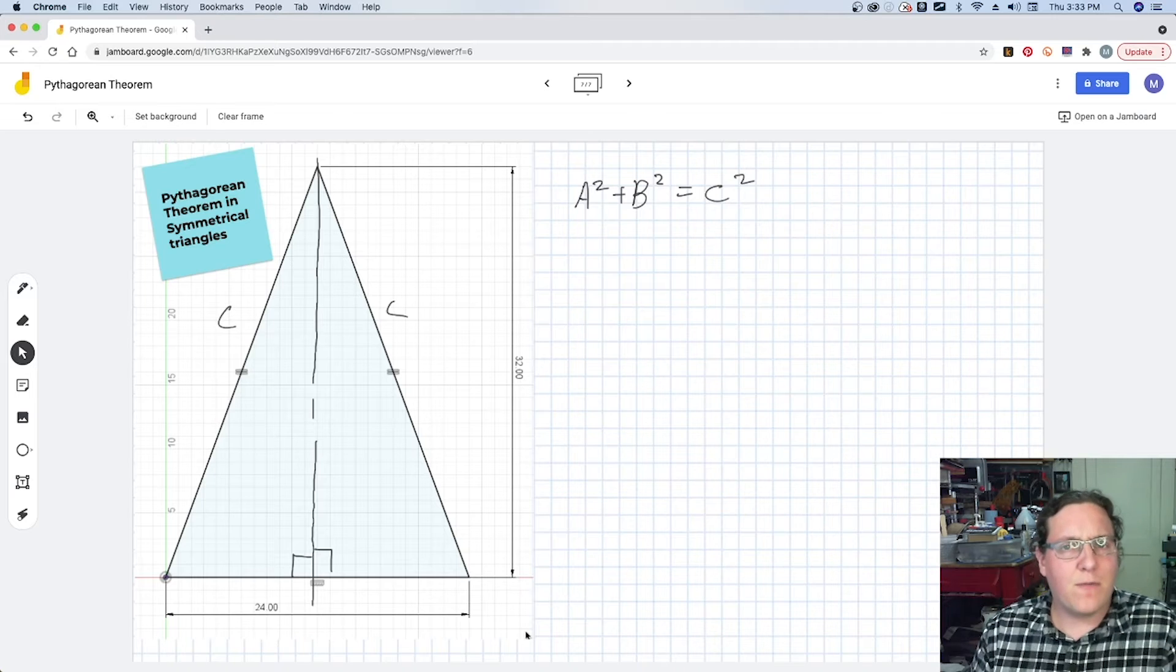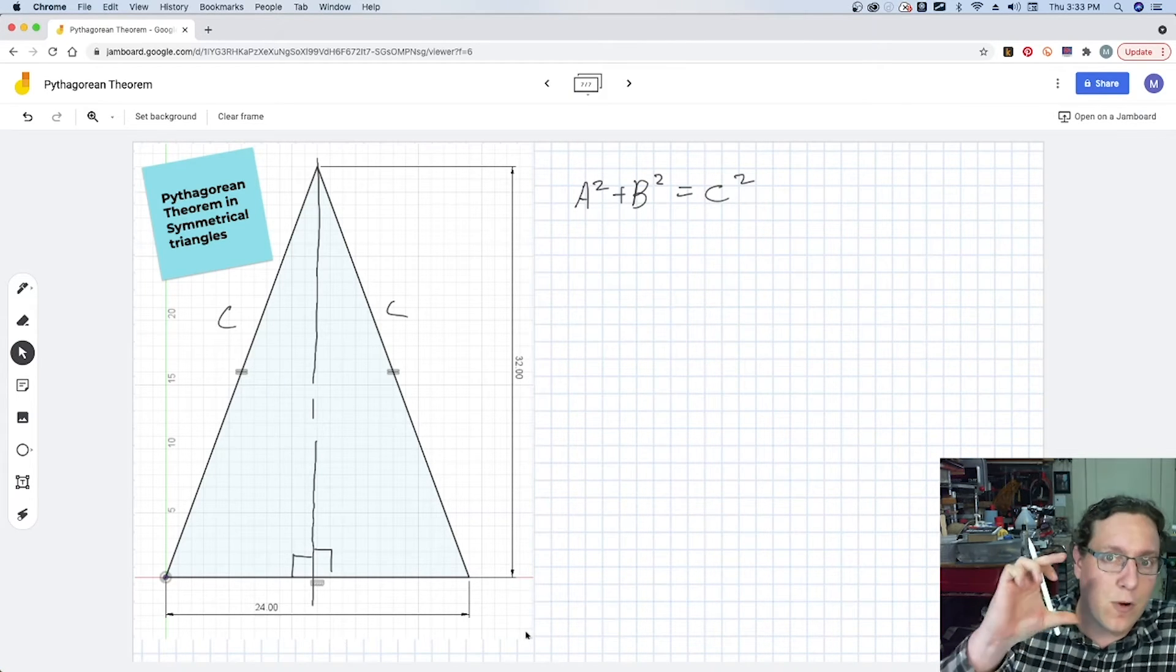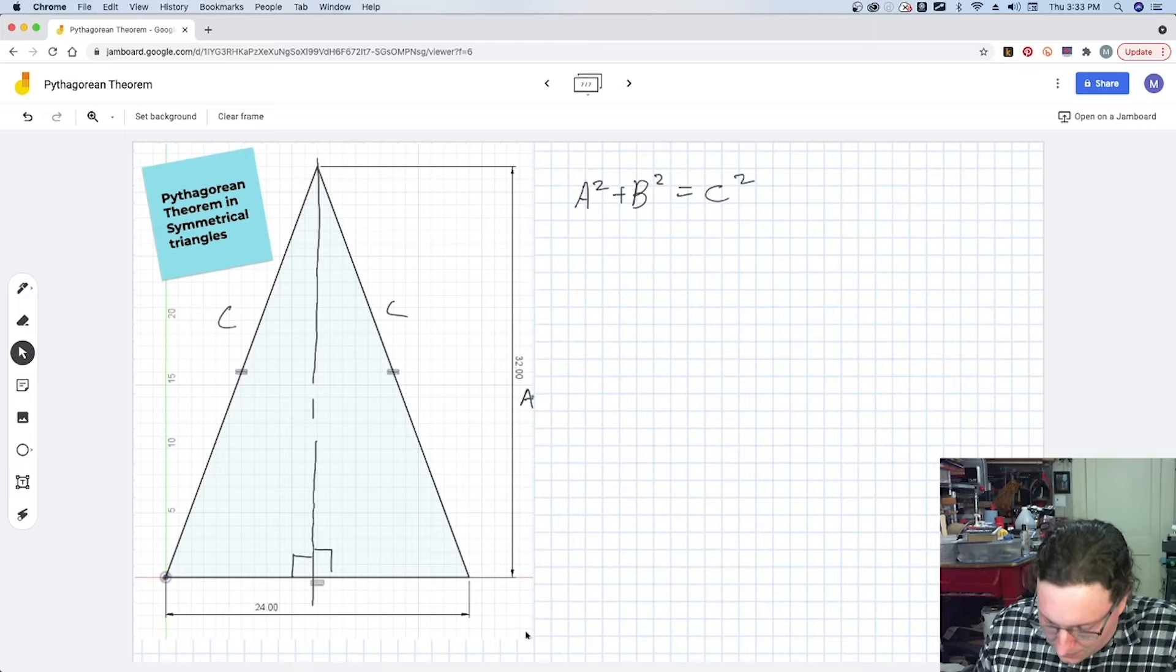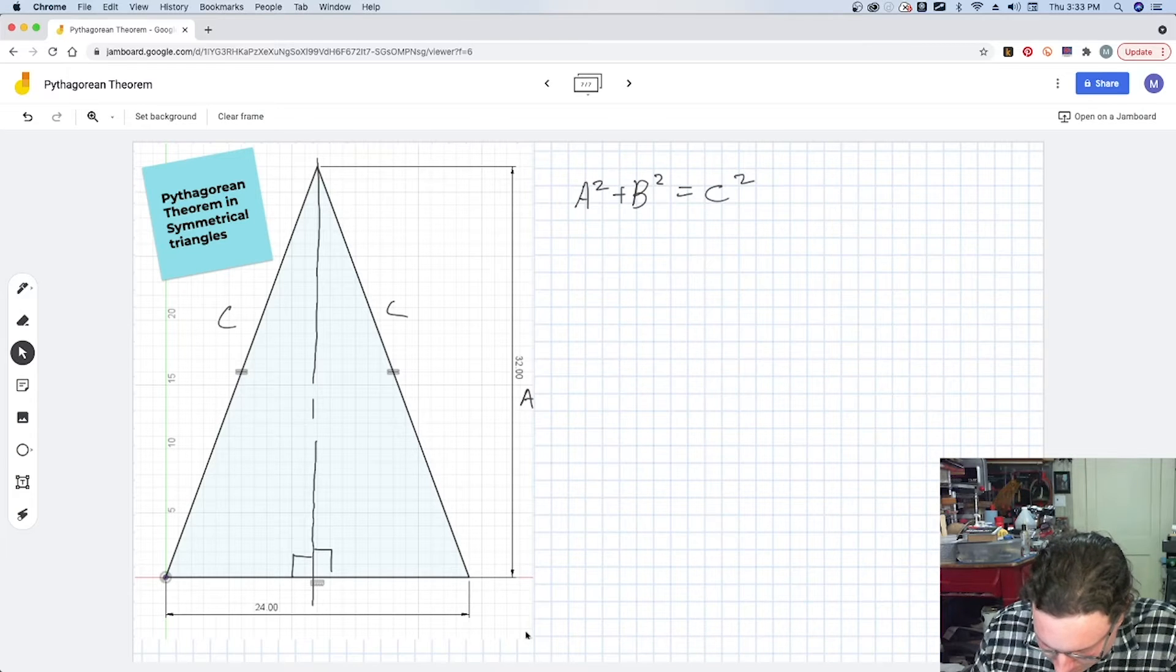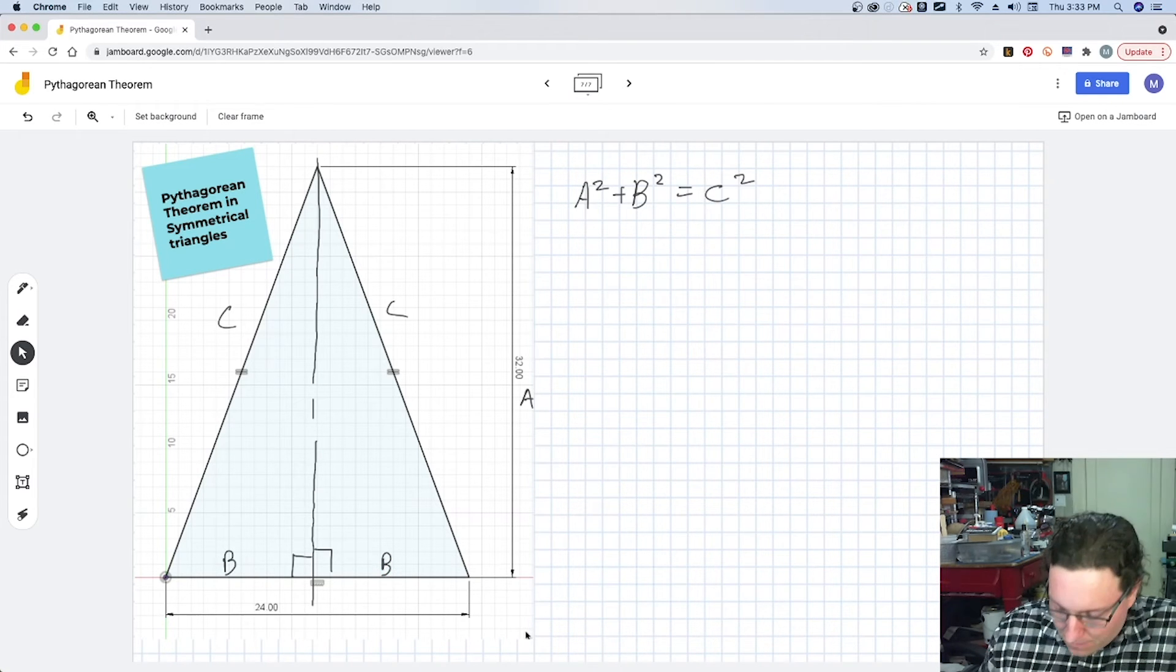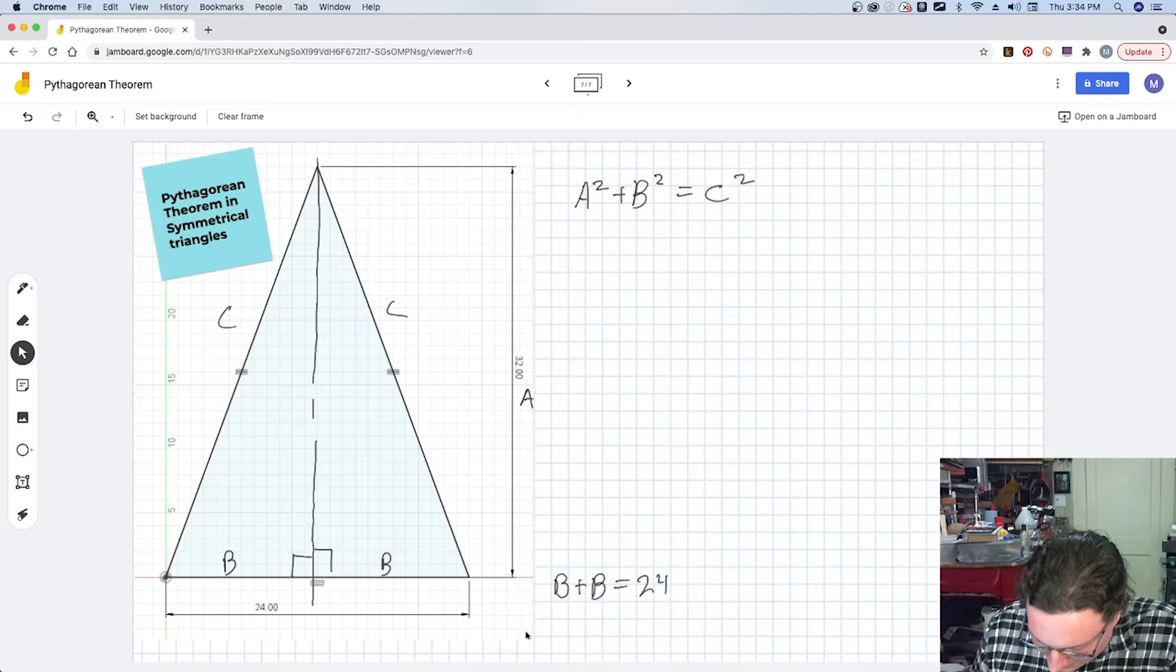We can pick through our information. I'm going to keep it simple and say that our overall height, that 32 inches, is going to be our A value. Our B value is going to be either side of that symmetrical line. But that B + B is going to equal that 24, or we could assume that is basically 2B.